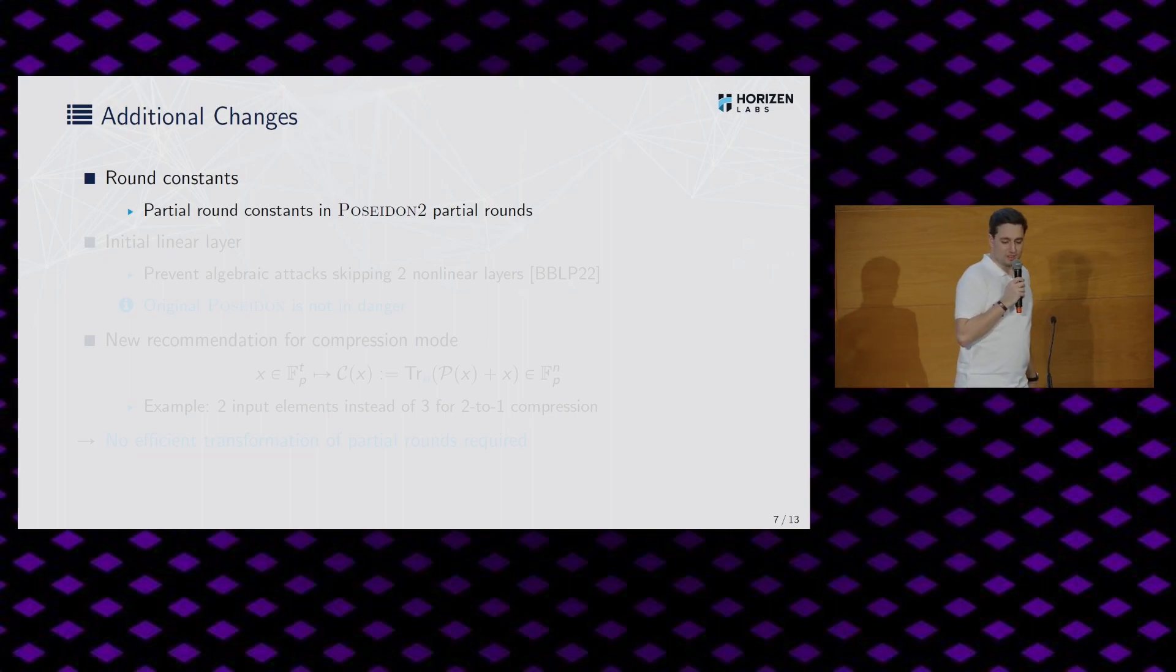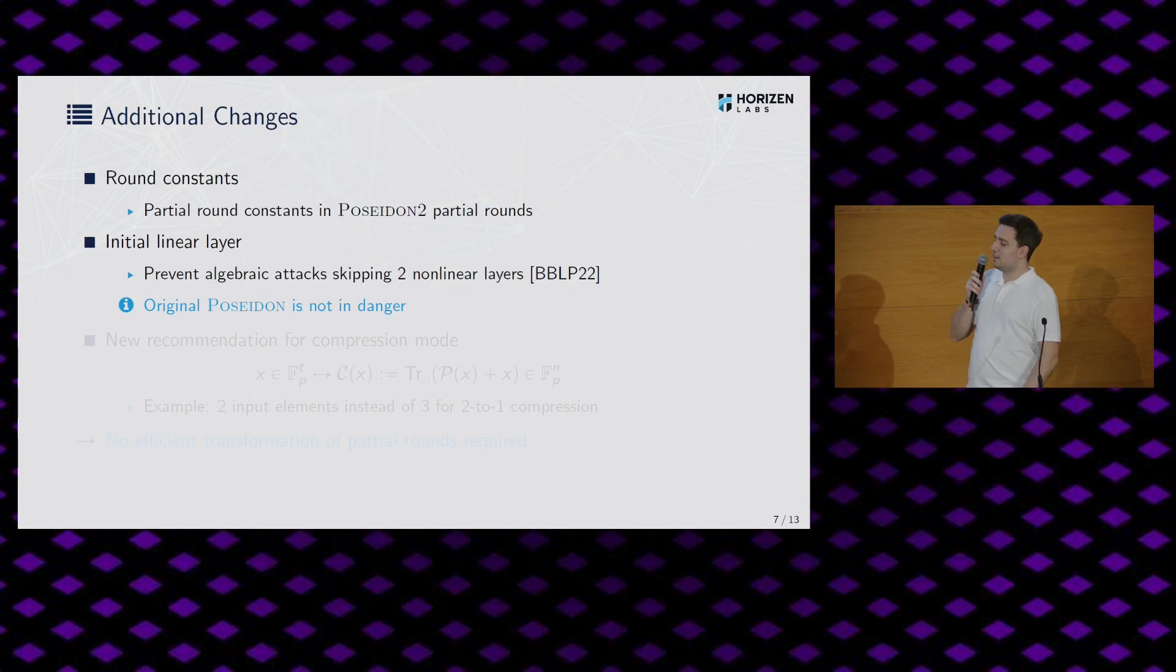All right, so we also did some additional changes to Poseidon. So first, since there was this optimized implementation, we would just add the partial or the round constants to the first word in the partial rounds. We now do this directly so the optimized version is not needed anymore, the more efficient implementation version. And we also add a linear layer to the very beginning of the permutation. And the reason for that is that there have been some attacks in the past which essentially allow you to skip, I think, up to two nonlinear layers without increasing the cost a lot of the attack. So we do this like as a precautious measure. But let me emphasize that the original Poseidon, which does not do that, is not in danger. So it's still safe to use the original Poseidon. The change is very minimal in that regard.